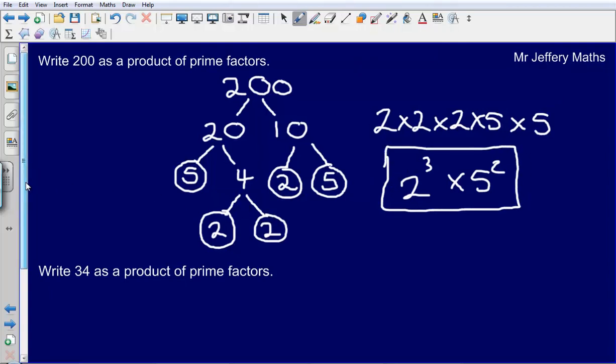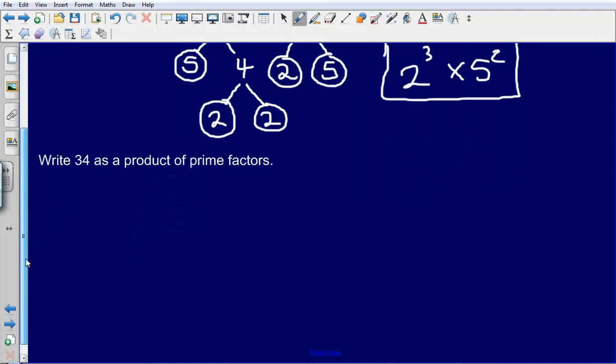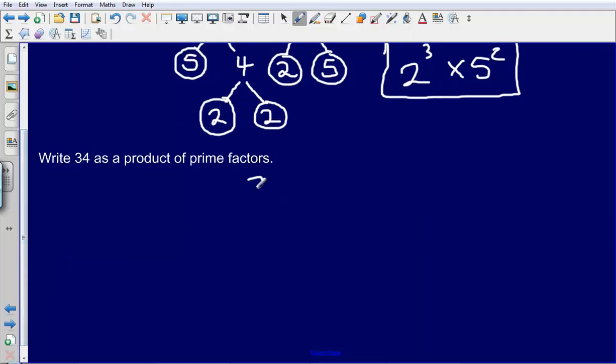OK. Next one, write 34 as a product of prime factors. So write out the number 34 to begin with. Then, what two numbers can I multiply together to make 34? 2 and 17. 2 times 17 gives us 34. And both of those are prime. So my final answer here is simply just 2 times by 17.